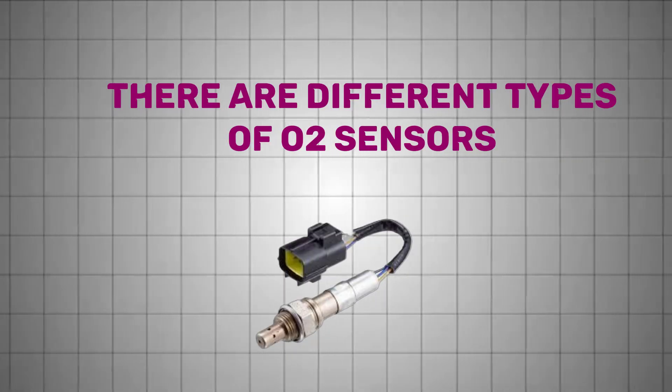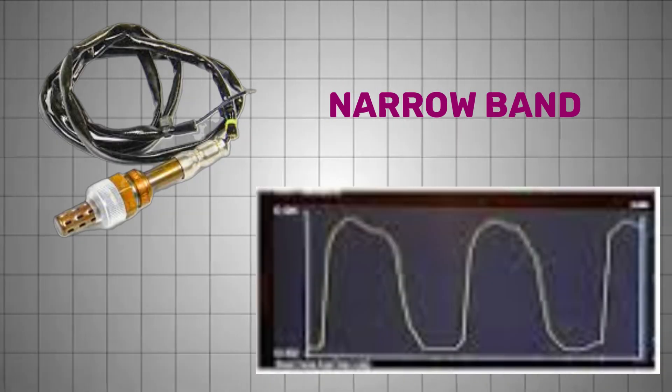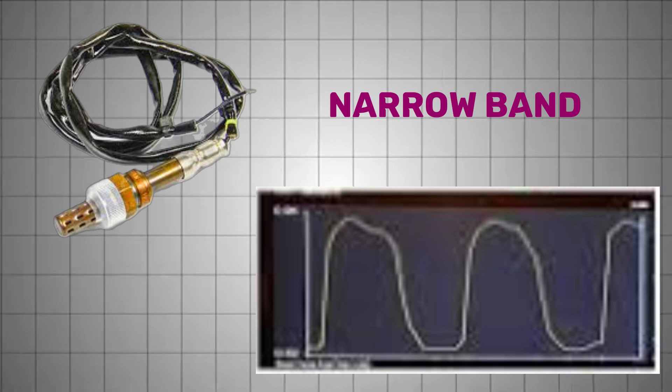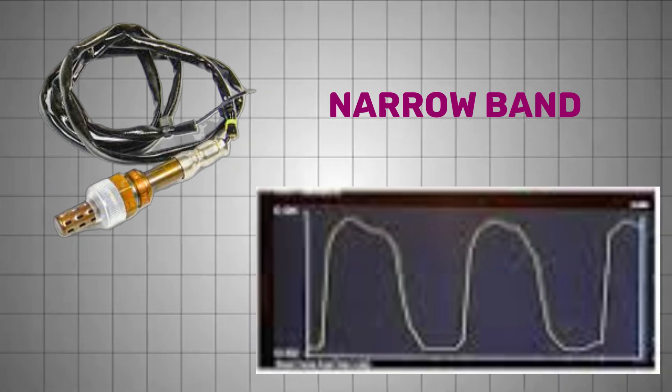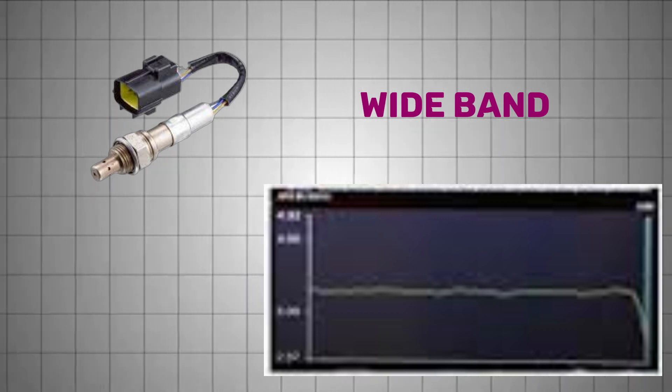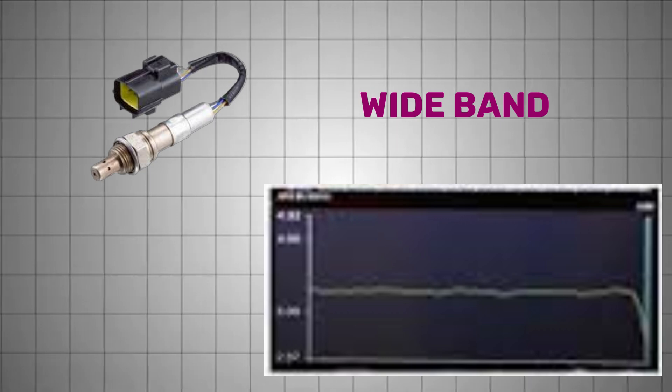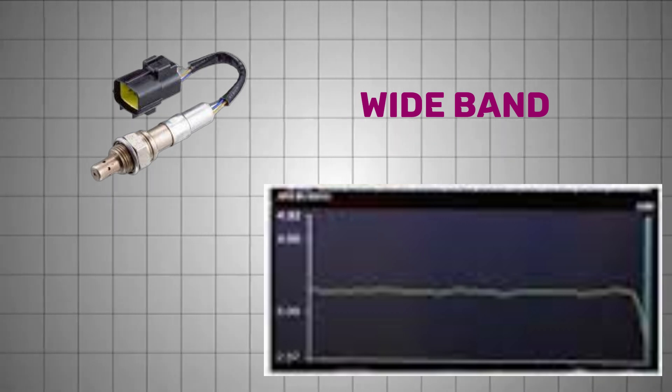There are different types of oxygen sensors used in vehicles today. Narrow-band sensors simply tell the ECU whether the mixture is rich or lean, but not by how much. Wide-band sensors, on the other hand, provide a continuous and more precise signal across a wider range of air-fuel ratios, making them essential for modern engines with tighter emission standards.